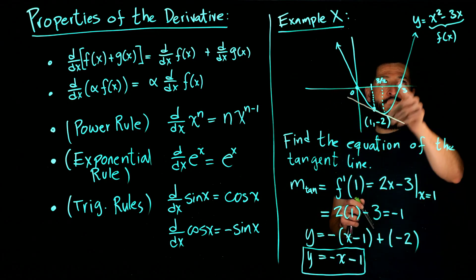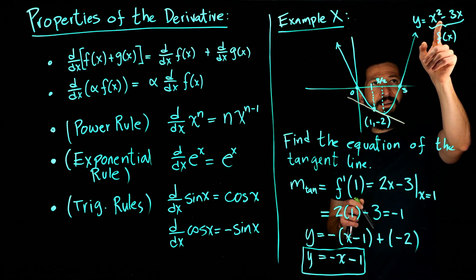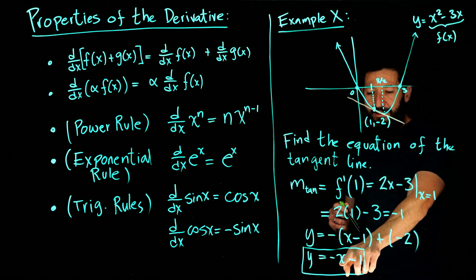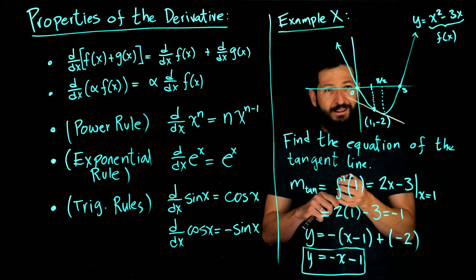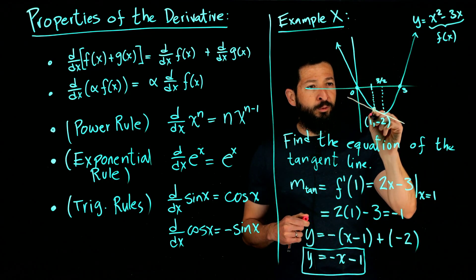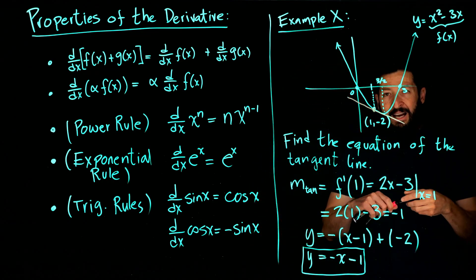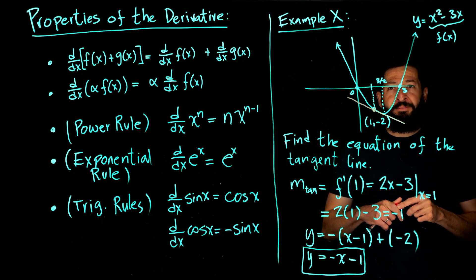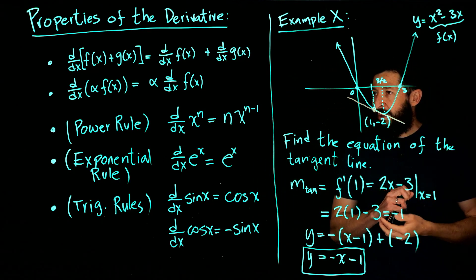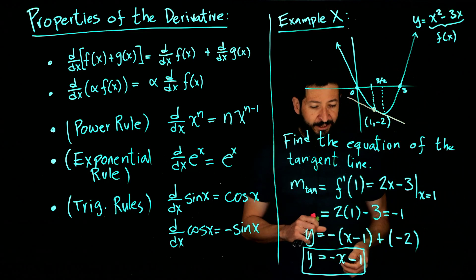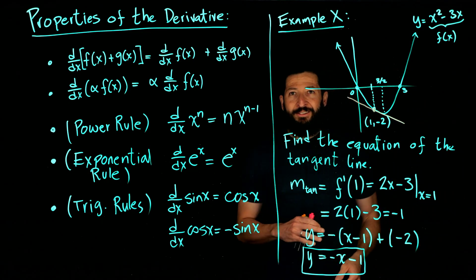So the same value I get evaluating at the function I get for the tangent line. And that just represents the fact that this is an intersection point for both the tangent line and the graph of the function. So that's all for this video. I hope you enjoyed it, and I'll see you next time.